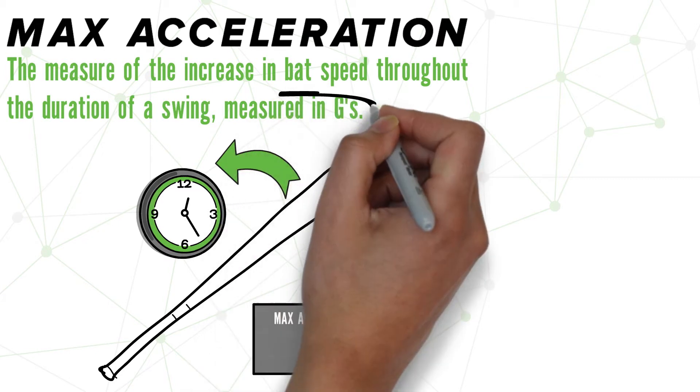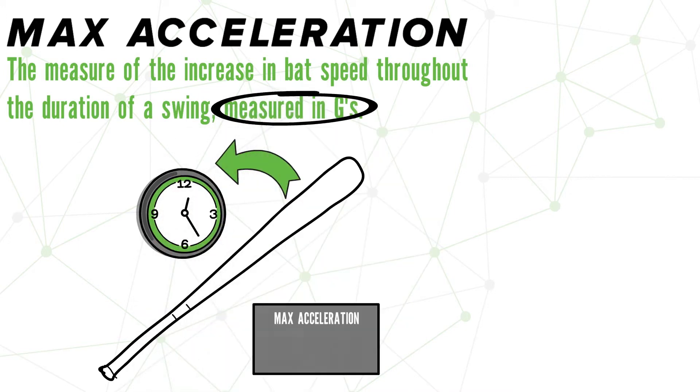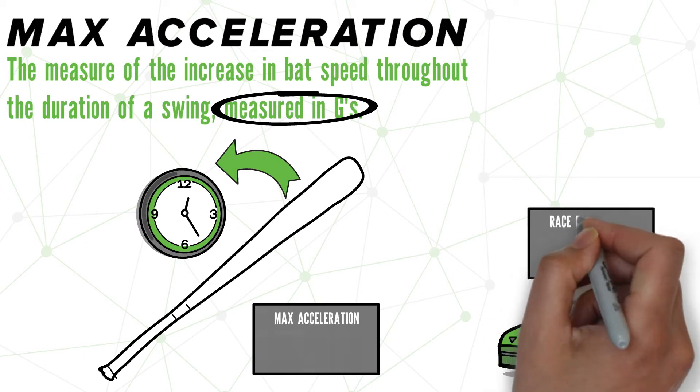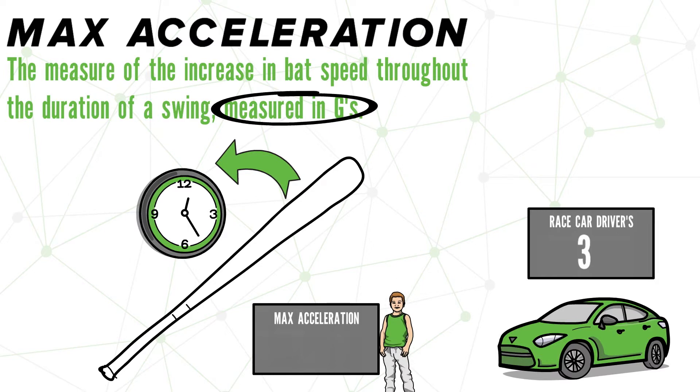So, we say that this metric is measured in Gs. You may be familiar with this unit for roller coasters or rocket ships. But to put it in perspective, a race car driver will experience 3 Gs when going around a turn. In comparison, a 10 year old with a pretty good swing can generate up to 25 Gs of force.